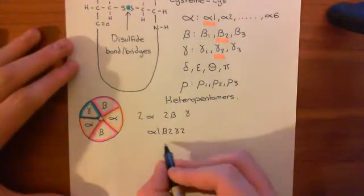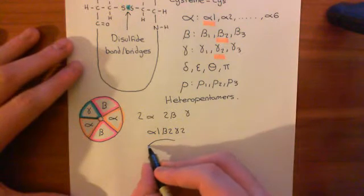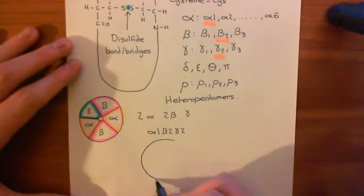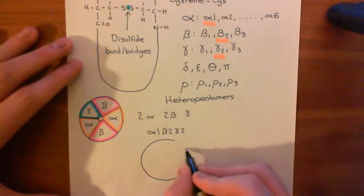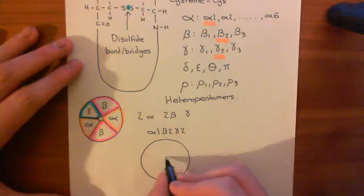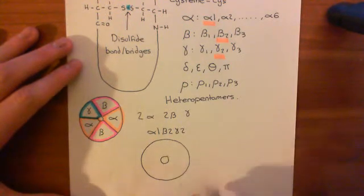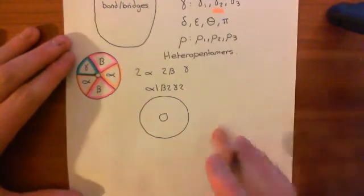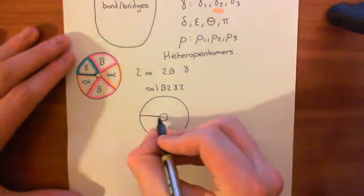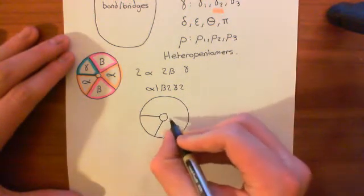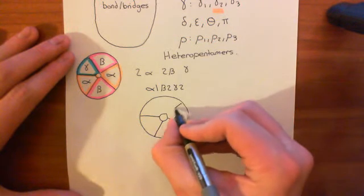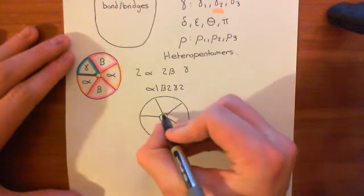So now, just to make this utterly clear, I'll actually draw the picture for you. Here's this cartwheel drawing again where we're viewing the GABA-A receptor from above, from the extracellular aspect. Here are the five subunits making up the GABA-A receptor. One, two, three, four, five.